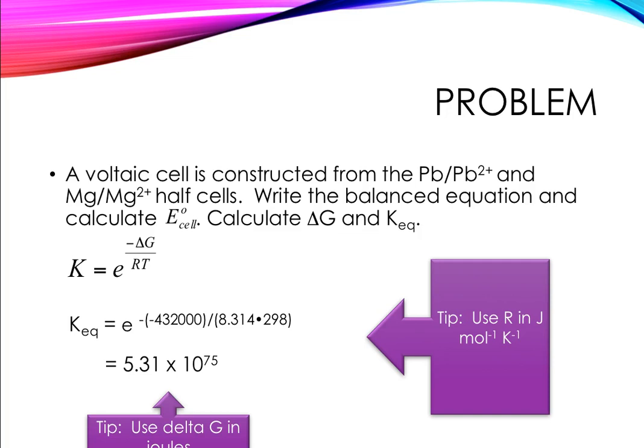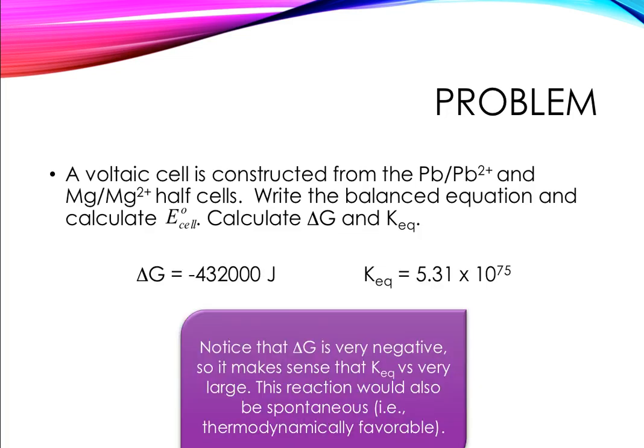We get a very, very large value for K. That seems reasonable because E cell is positive and delta G is negative. When we have a very negative delta G, that correlates to favoring products — you're going to have a large K eq value. So when delta G is negative, K eq will be very large, which means the reaction would be spontaneous or thermodynamically favorable. On the other hand, if delta G comes out to be positive, K should be very small because you're not making a lot of products — it's not favorable to proceed in the forward direction and you'll have mostly reactants.